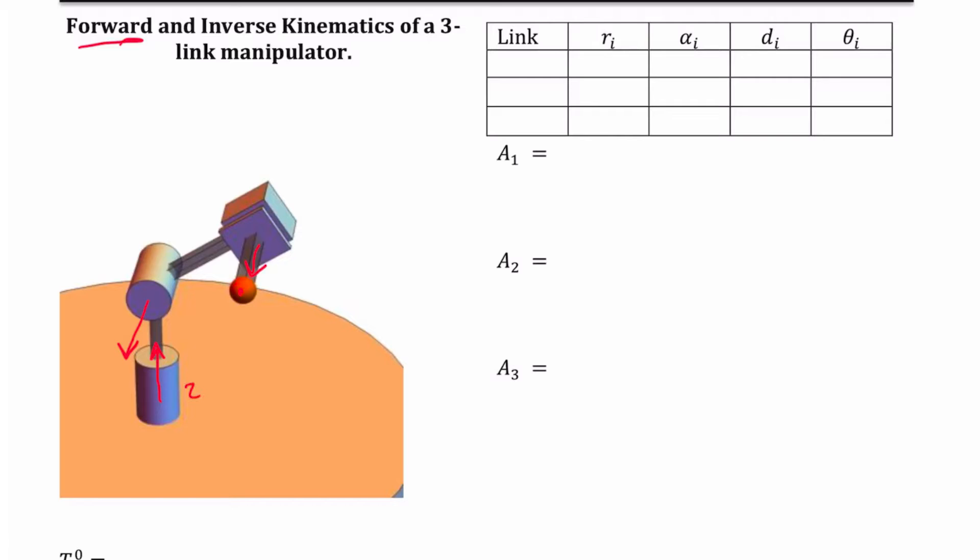This is z0. This one here is z1. This over here is z2. We're going to say that the end effector is also going to be in the same direction. That's z3.